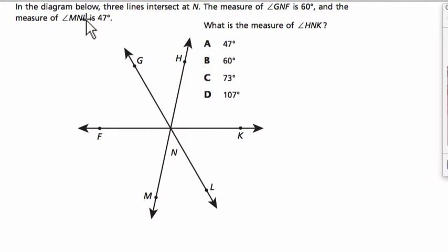Okay, let's start by reading the problem together. It says that in the diagram below, three lines intersect at N. So I'm going to take my pen tool and kind of identify this line right here, MH, GL and FK, and I notice they are all meeting at one point, this point right here.